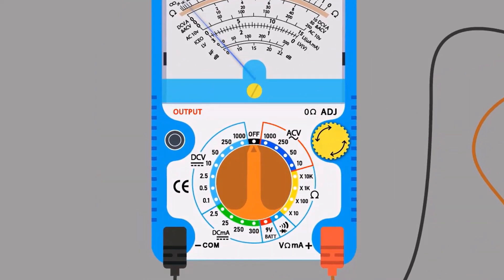Blinking line shows AC voltage section. And arrow shows range of voltage which we can measure. Select 250 volts range.